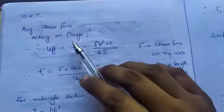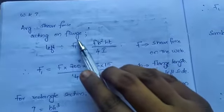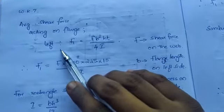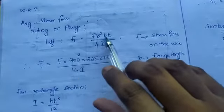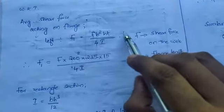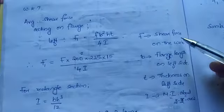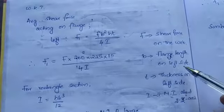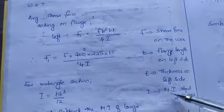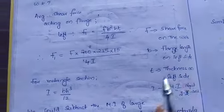Now we need to find out F1 and F2. Average shear force acting on left flange is F1 equals Fb²ht/4I. This is the common formula where F is the shear force on web, b is the flange length on left side, t is thickness, and I is moment of inertia about z-z axis.